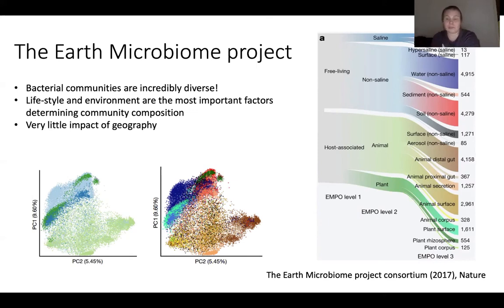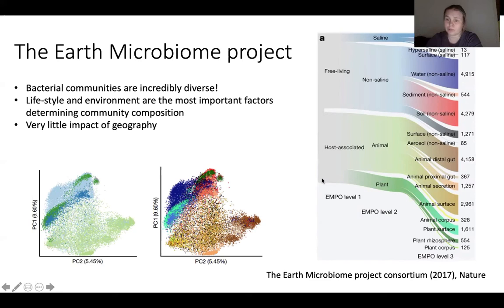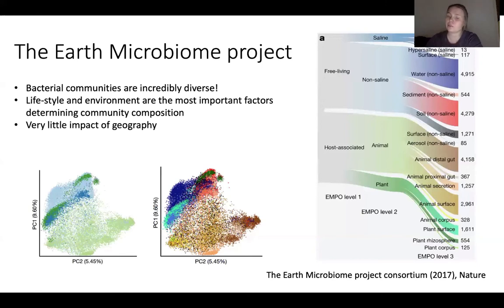One of the important determinants of which bacteria you find is whether the bacterial community is free-living, such as from the ocean, or host-associated, such as from the gut of an animal. Other environmental factors are also important — for free-living bacteria, salinity is known to be important. For host-associated bacteria, it also matters which part of the animal or plant the bacteria colonize. One of the things that doesn't seem to matter much is geography — where the samples came from.